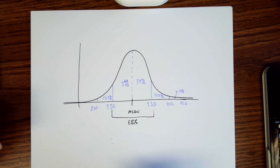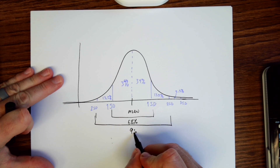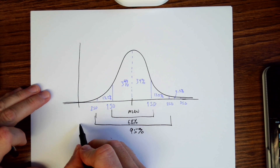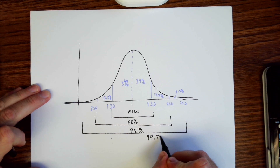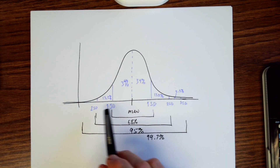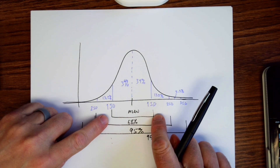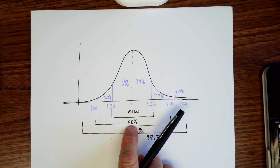From here to here would be 68% of the data roughly — in ideal situations of course; in real-world settings this changes a little bit. From here to here we have 95% of the data within two standard deviations of the mean. When you get to three standard deviations, you're at 99.7% of the actual values. So at three standard deviations you should be including almost all the data set. This is assuming a normal shape, and this is what it means to be within one standard deviation of the mean.